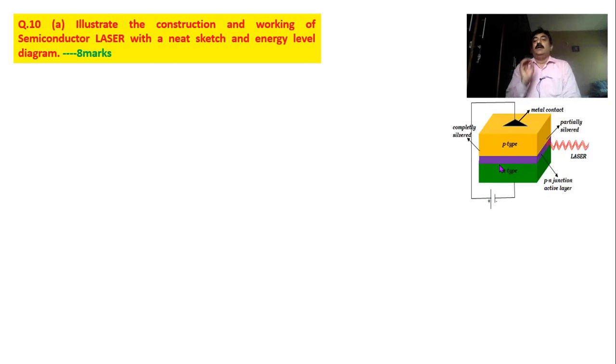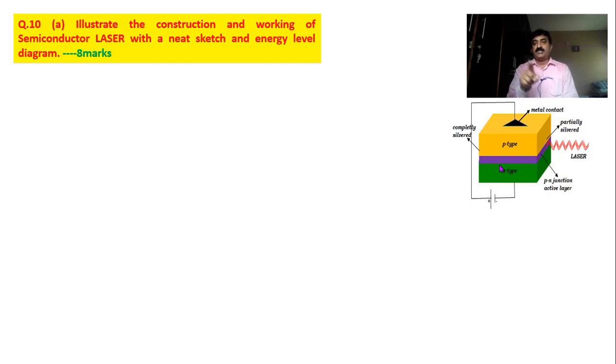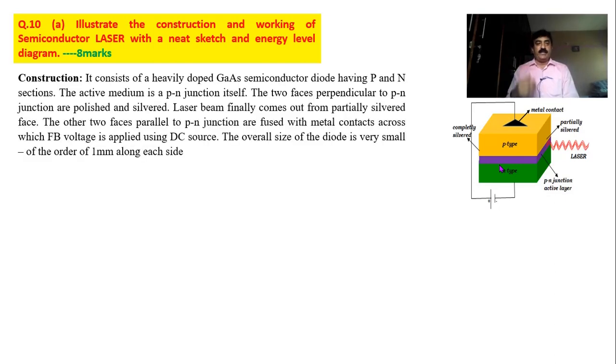To summarize the construction: the semiconductor laser consists of two semiconductors — p-type and n-type — joined together to form a junction. One face is completely silvered, another face is partially silvered so the laser finally escapes from the partially silvered face. The remaining two faces are connected to metal terminals for battery connection and biasing. It is better to mention the type of semiconductor being used; here we use gallium arsenide.